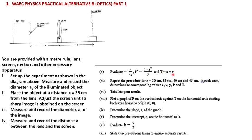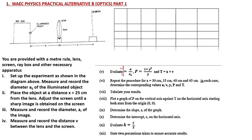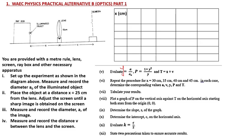So y equals A over A-naught, that's what it means. The table will have columns: x in cm, A in cm (diameter of the image on the screen), v in cm, y equals A over A-naught, p equals 1 plus y-squared all over y, and t equals s plus v.